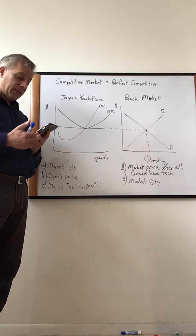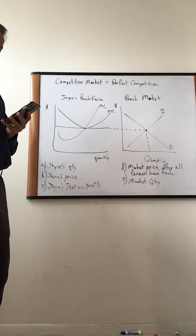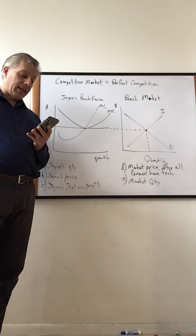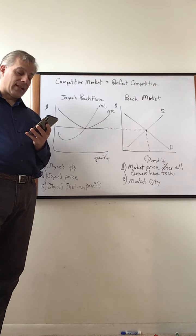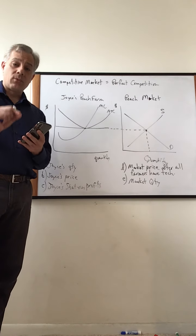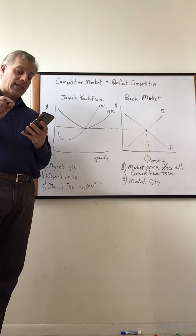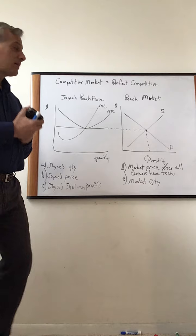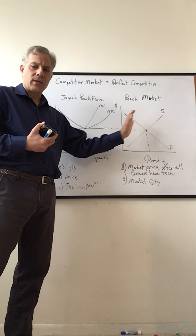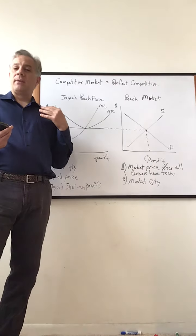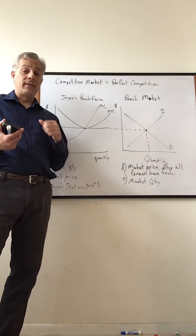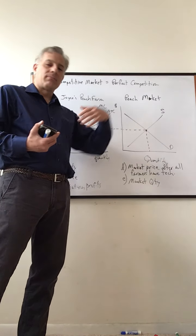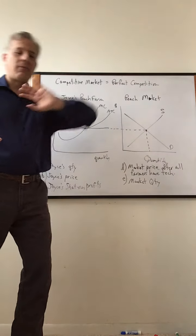Joyce discovers a technological breakthrough that only reduces the cost of producing peaches. Explain how the change in technology will affect each of the following for Joyce — super important. It says 'for Joyce,' not for the market, at least not yet. AP is great at tripping you up by just at the end saying it's for Joyce, knowing that one-third of the people are going to do it for the market.